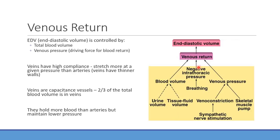Venoconstriction from sympathetic activation increases venous pressure, which increases venous return to the heart, increasing end-diastolic volume and preload. Skeletal muscle activity also increases venous return by putting extra pressure on the veins. Even breathing can have a positive effect on increasing venous return.